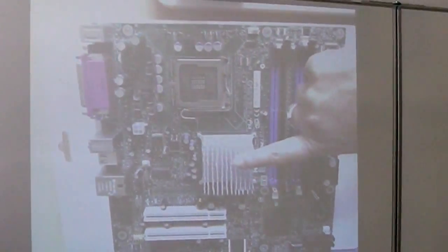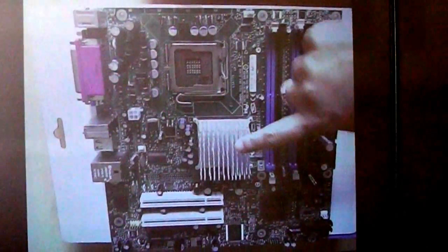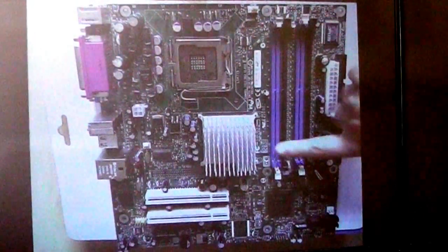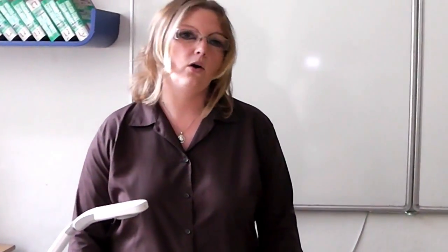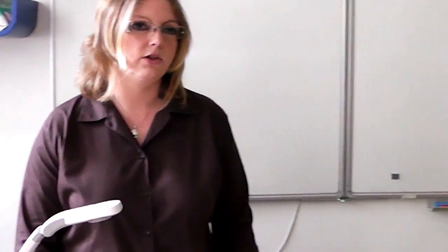The next part is the north bridge. The north bridge interconnects the RAM slots, the CPU socket, and on some boards the AGP slot. But nowadays it's usually a part of the processor itself, so maybe you can't find it on your boards. It depends on the type of board you have.